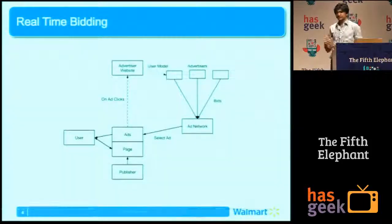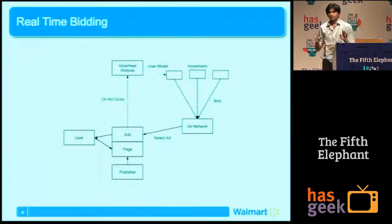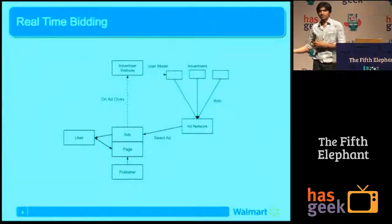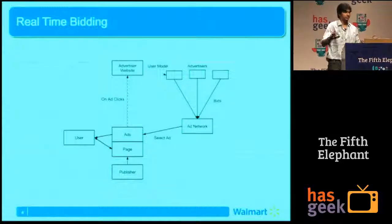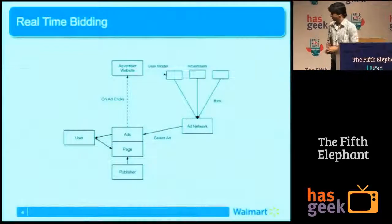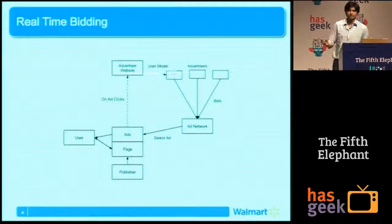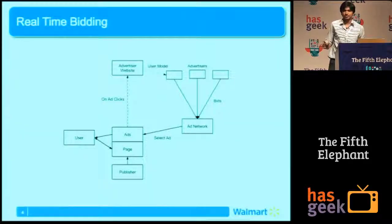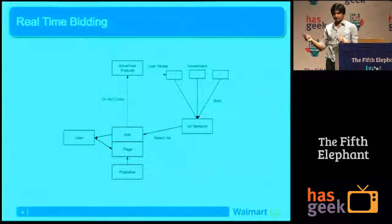What makes all of this possible is a technology called real-time bidding. Earlier, if you wanted to show ads, you would go to an ad network and say 'here's some money, get me so many impressions or clicks.' What happens now is this: suppose you have a blog post and you want to show an ad. You'll allocate a space on it and give it to an ad network. Every time your page is loaded by anybody across the world, a call is made to the ad network.